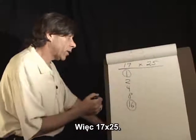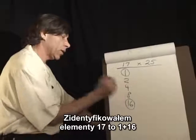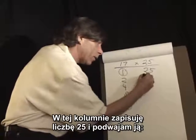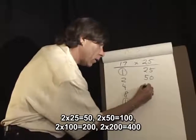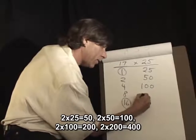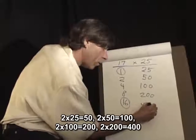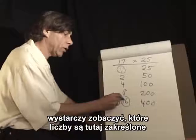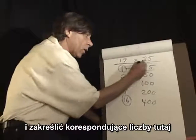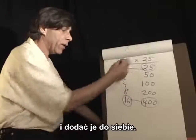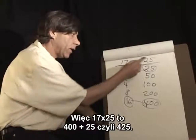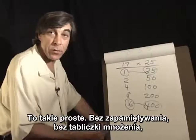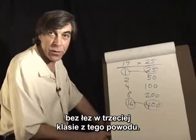So 17 times 25: I've identified the elements of 17 as one plus 16. And in this column, I write the number 25 and I just keep doubling it. Twice 25 is 50, twice that 100, twice that 200, twice that 400. So in order to know the product of 17 times 25, we just have to look at which numbers are circled over here, circle the corresponding ones over here, and add them together. So 17 times 25 is 400 plus 25, or 425. It's that simple — no memorization, no times table, no tears in the third grade about this.